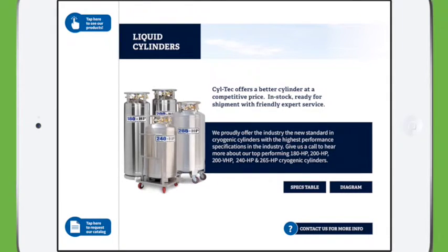Each product page showcases the name of the product, description, and a little bit of additional information. A really great feature includes two other buttons: specs tables and diagrams.